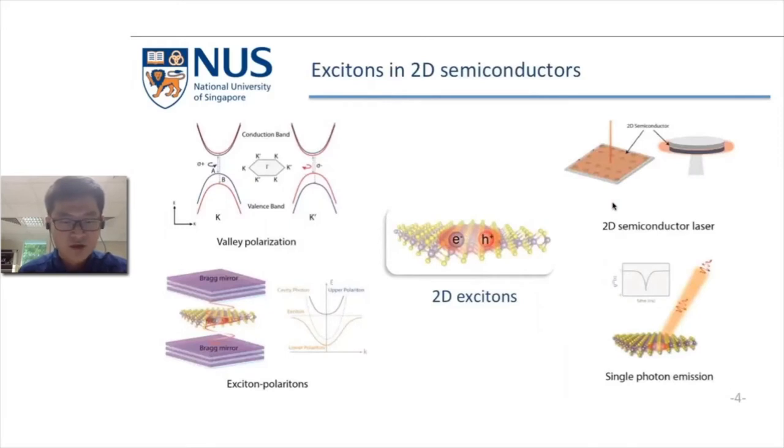The optical properties of 2D semiconductors are dominated by 2D electron-hole pairs. These excitons in the 2D system have highly selective circular polarized light emission, exciton polariton states, lasing states, or quantum emitter states.